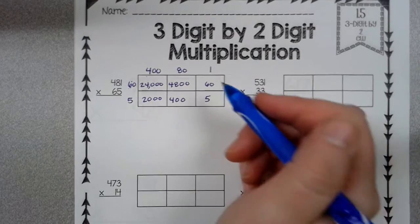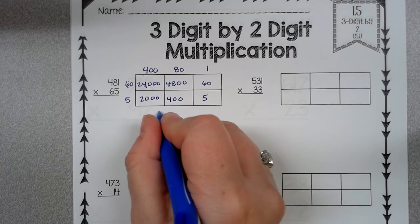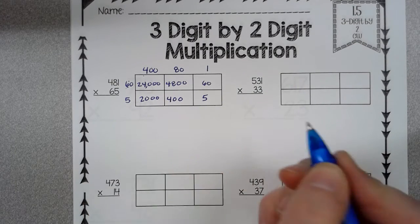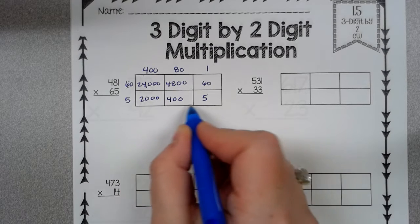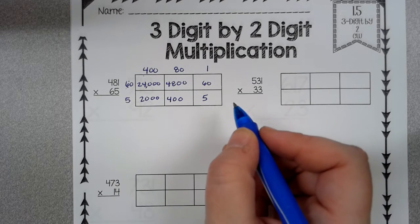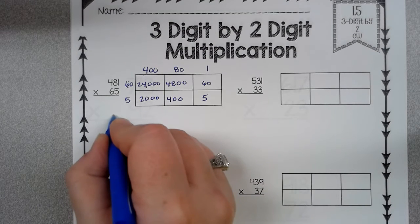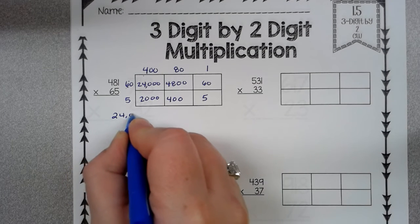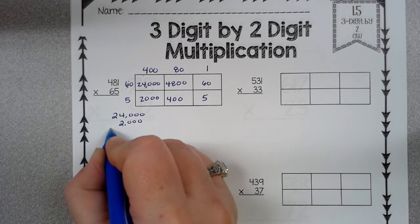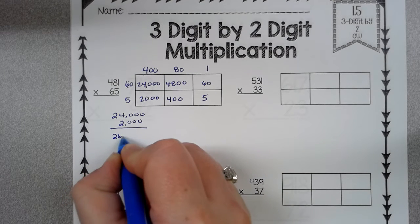So now what we do is we take our partial products, line them up nice and neat. If you want to, you could line them up right here. But I didn't do that. So what I'm going to do is I'm going to go 24,000 plus 2,000. That's 26,000.